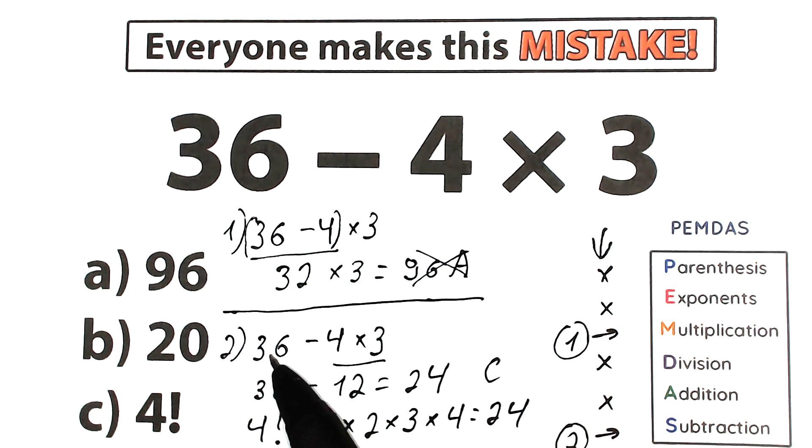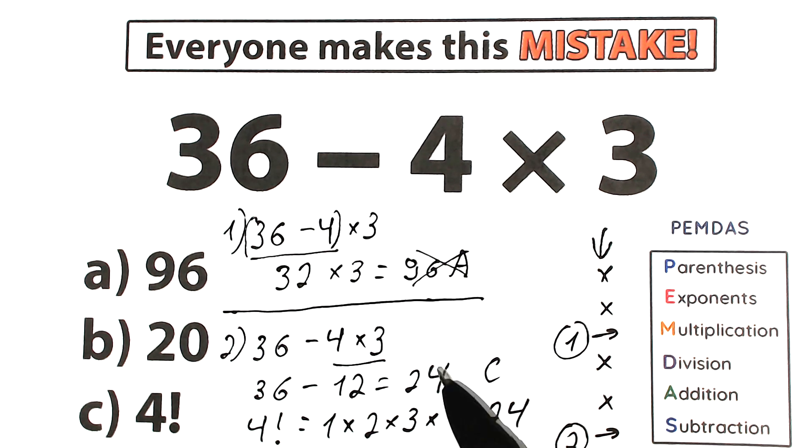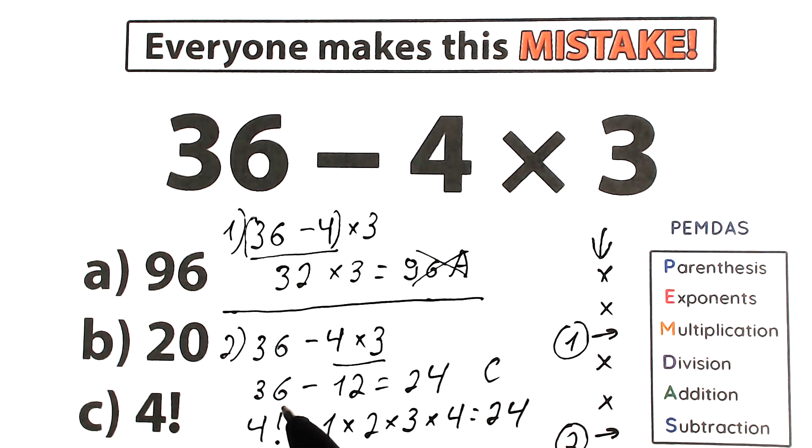Let's look at our second interpretation. We solve the challenge according to PEMDAS. First we multiply 4 times 3 which is equal to 12. Then we subtract 36 minus 12 which is equal to 24. This is a correct answer, this is a correct approach, correct solution.